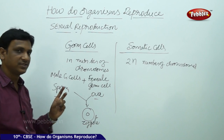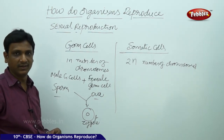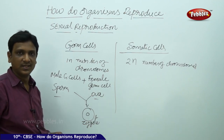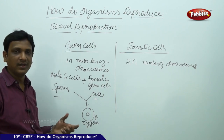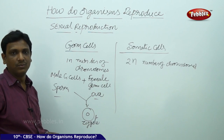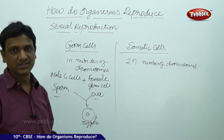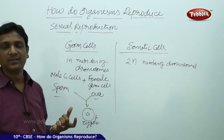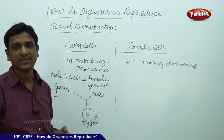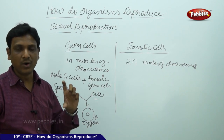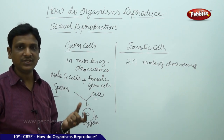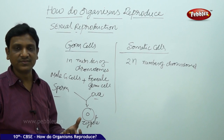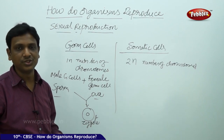Sexual reproduction involves two organisms — male and female. This kind of reproduction is seen in both plants and animals. In plants, we call them male gamete and female gamete rather than sperm and ova. Even plants have male and female reproductive parts. In most cases, these are fixed in one part called a flower. Some flowers consist of both male and female parts — those are bisexual flowers. Some flowers have either male or female organs — those are unisexual flowers.